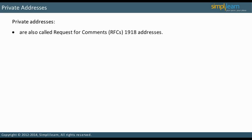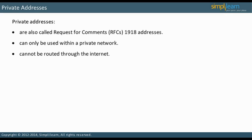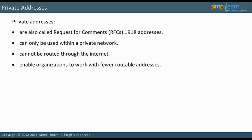Private addresses are also called RFC 1918 addresses because it is the name of the standards document that defines them. They can only be used within a private network and cannot be routed through the Internet; therefore, they are also called unroutable addresses. The significance of private addresses is that by using them, the organization needs fewer routable addresses, since public addresses cost money. Devices with private addresses can still access the Internet if Network Address Translation, or NAT, is implemented. NAT lets a LAN device borrow a public address when it needs to access the Internet.